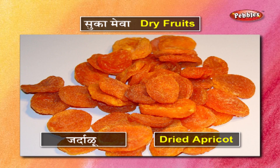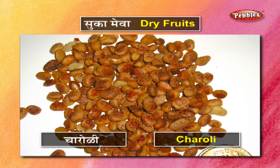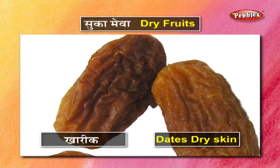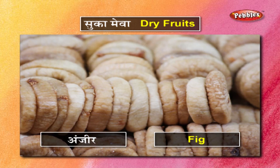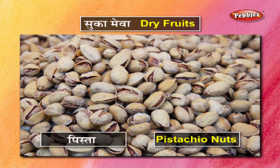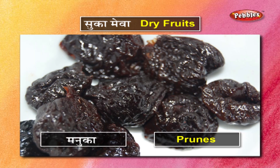जरदाळू. चारोळी. खजूर. खारीक. अंजीर. शेंगदाणे. पिस्ता. मनुका.